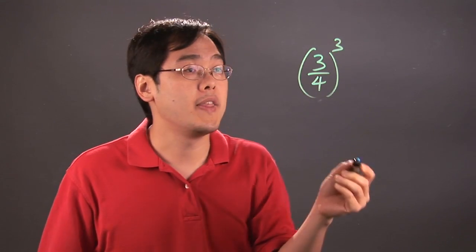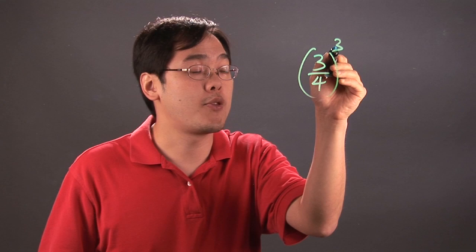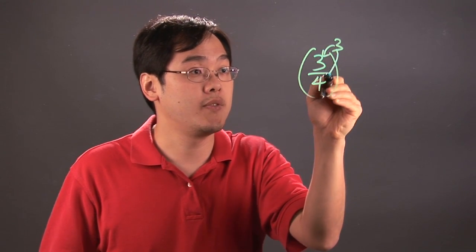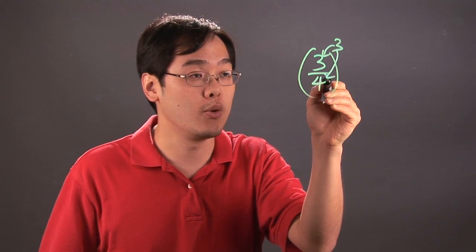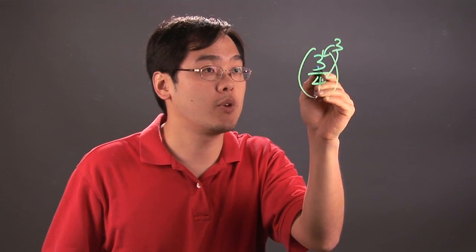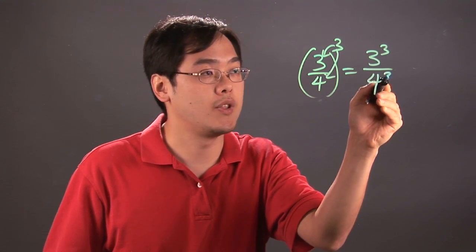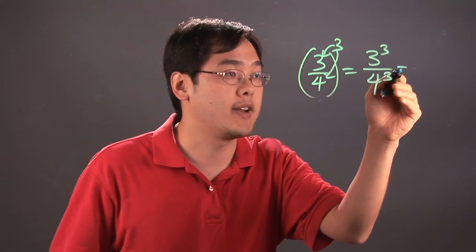For example, if you have 3/4 raised to the third, then the exponent is raised to both of the numbers. Think of it as a multiplication to both exponents. In other words, you have 3 to the third over 4 to the third, and then you simplify after that.